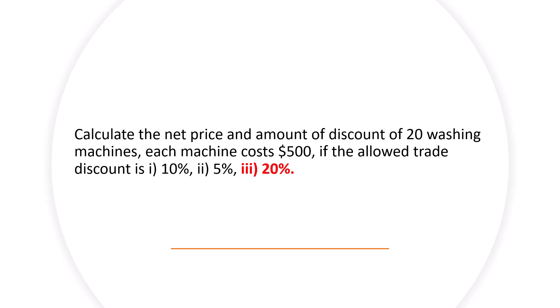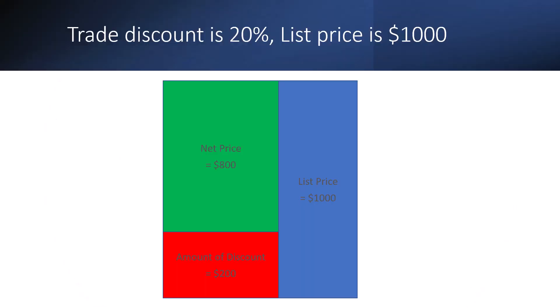Let's do another example where the trade discount has increased to 20%. How does it affect the variables we're talking about? The amount of discount, which is 20% of $1,000, is $200, which means the net price is $800. So when you increase the trade discount percentage, the amount of discount increases, but the net price actually works in inverse and decreases. It always works together because the net price and the amount of discount have to add up to the list price.